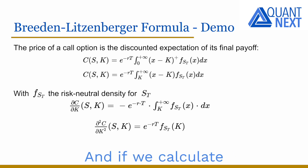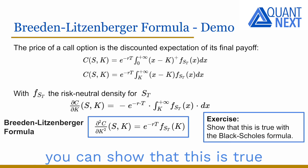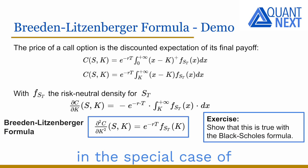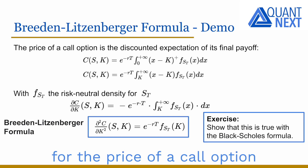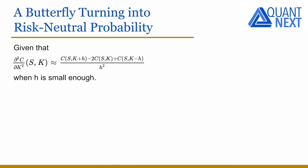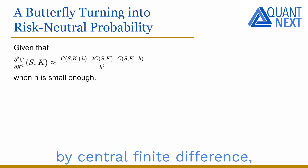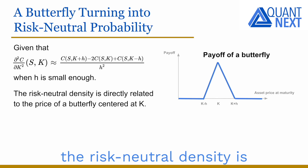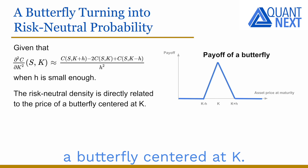If we calculate the second-order derivatives, we obtain the Breeden-Litzenberger formula. As an exercise, you can show that this is true in the special case of the Black-Scholes model using the Black-Scholes closed-form solution and calculating its second derivatives with respect to the strike price. The second-order derivative of the call price can be proxied by central finite differences, and we easily see that the risk-neutral density is directly related to the price of a butterfly centered at K.